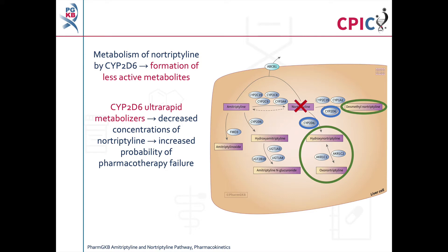In CYP2D6 ultra-rapid metabolisers, metabolism of nortriptyline is increased. This reduces the concentrations of nortriptyline in the body, which increases the probability of pharmacotherapy failure.